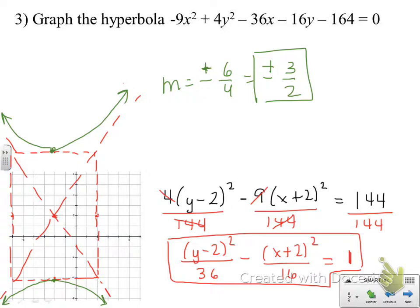Here's what your completed graph should look like. Notice that it opens vertically because the y squared term is positive. The center, be careful with your h and k. Remember the h is negative 2, the k is positive 2, negative 2, 2. Horizontal distance is 4 units. Vertical distance here is 6 units. And when we find the slopes of the asymptotes, the rise over run reduces to plus or minus 3 halves.